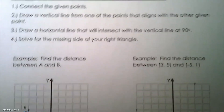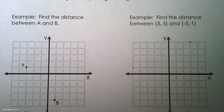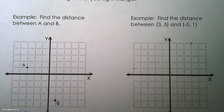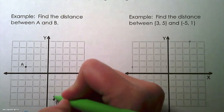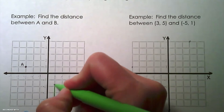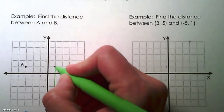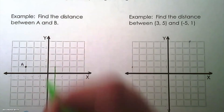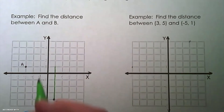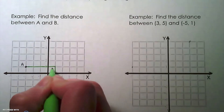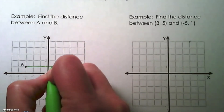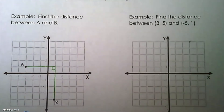In the first example, we're going to find the distance between point A and point B. Step two says to draw a vertical line that aligns with the other point, so I'm going from point B and drawing a vertical line, stopping at the point that aligns with point A. Now we draw a horizontal line from point A that intersects with the vertical line to create that 90-degree angle.